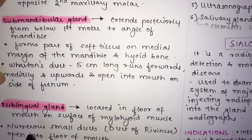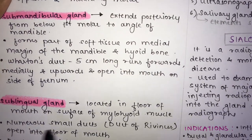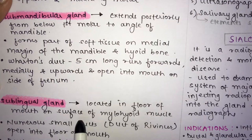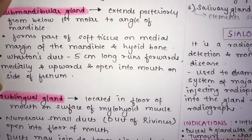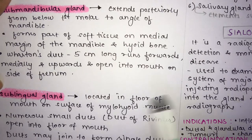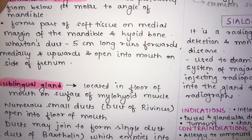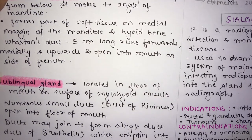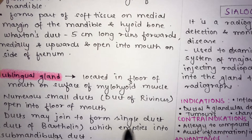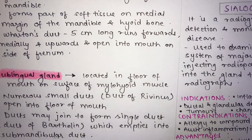The sublingual gland is located in the floor of the mouth on the surface of the mylohyoid muscle. There are numerous small ducts known as ducts of Rivinus, which open into the floor of the mouth. These small ducts may join to form a single duct called the duct of Bartholin, which empties into the submandibular gland.